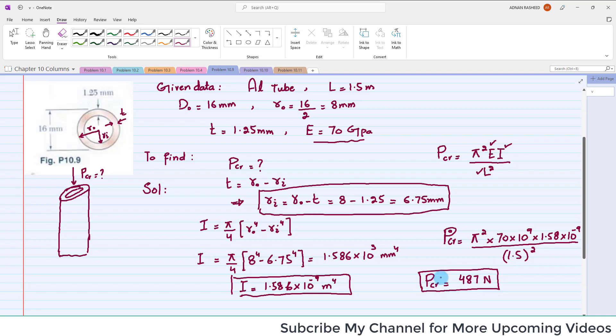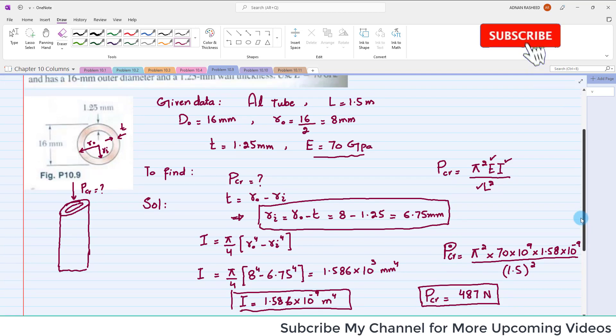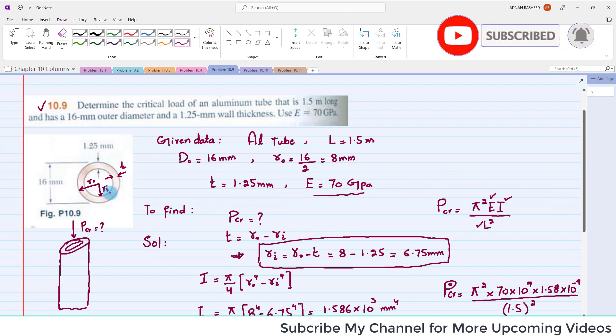P critical will be equal to 487 Newtons. This is a very easy and simple problem. I hope now you have a clear idea about how to find critical loading for a hollow tube. Thank you for watching the videos.